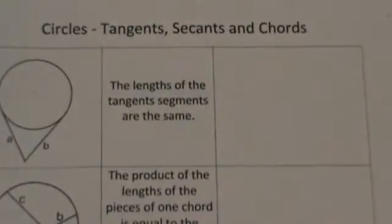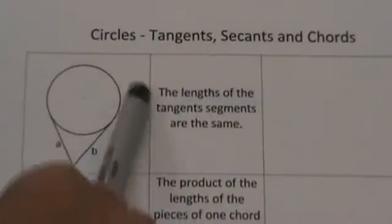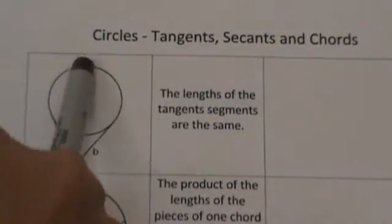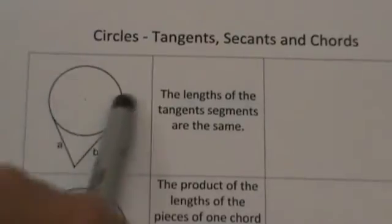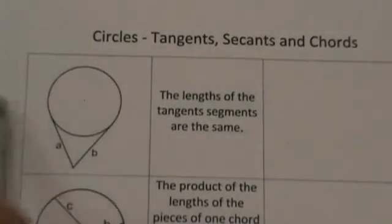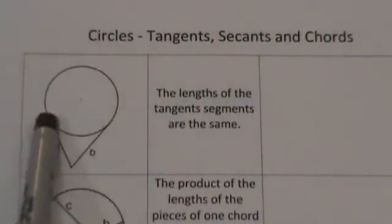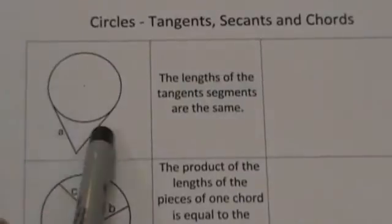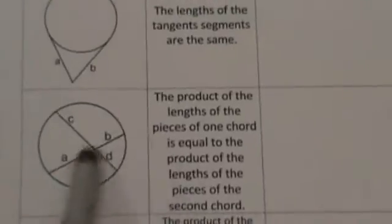The first topic we are going to go through is segments. In the last unit we concentrated on central angles, inscribed angles, and angles that were inside and outside the circle. This unit we are going to look at segments and the lengths associated with tangents, chords, and secants.